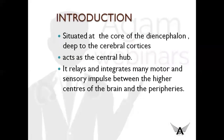First, what is thalamus? Thalamus is an ovoid nuclear mass situated at the core of diencephalon, deep to the cerebral cortices, and it acts as the central hub. Its main role is to relay and integrate many motor and sensory impulses between the higher centers of the brain and peripheries.